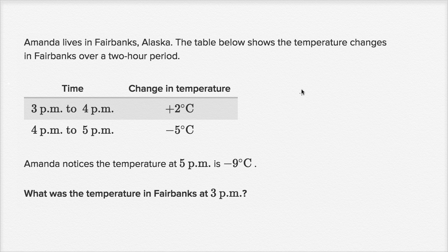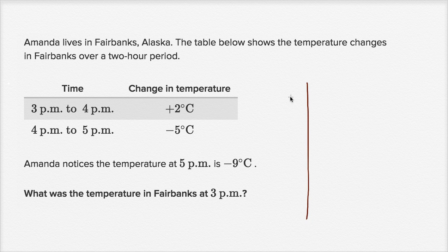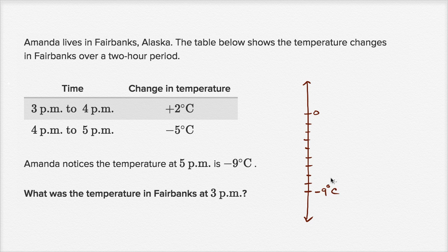Since with thermometers we're used to thinking vertically, I'll draw a vertical number line here to think about this a little bit. So at 5 p.m. we end up at negative nine degrees Celsius. Let's say this is zero, and counting down: negative one, two, three, four, five, six, seven, eight, nine. So we end up at negative nine degrees Celsius. This is zero degrees Celsius right over here.